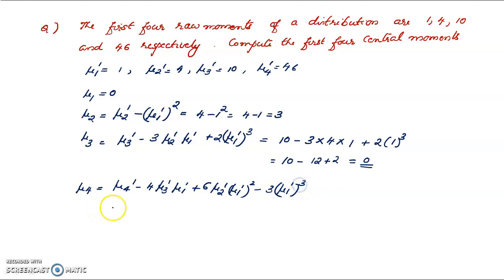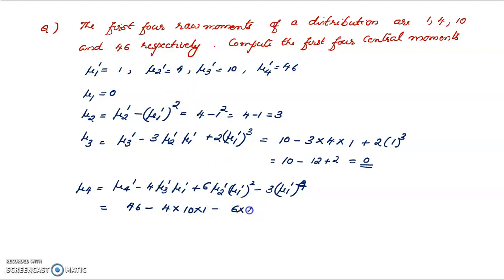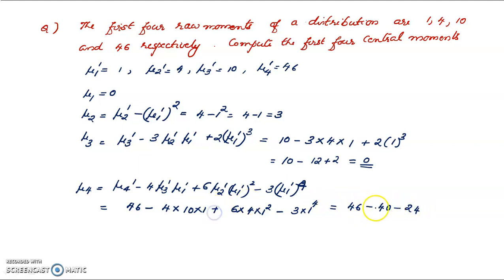For mu4, it is equal to mu4 dash minus 4 times mu3 dash times mu1 dash minus 6 times mu2 dash times mu1 dash squared minus 3 times mu1 dash to the 4th. That is 46 minus 40 minus 24 plus 24 minus 3, and the answer is 27.